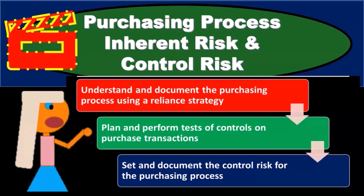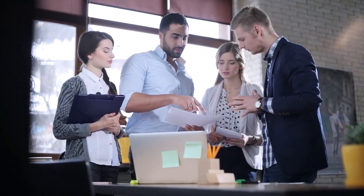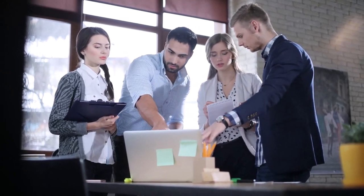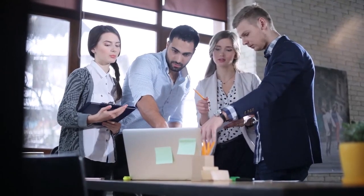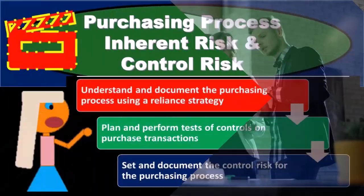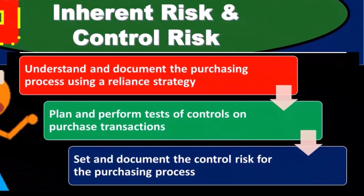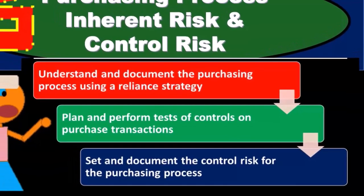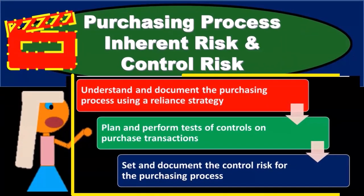In this presentation we will discuss inherent risk and control risk as they relate to the purchasing process. We're in the auditing strategy, considering the purchasing process. We want to consider those risk factors — inherent risk, control risk — and use them to determine what we should set the detection risk to be, which then determines how much substantive testing needs to be put in place.